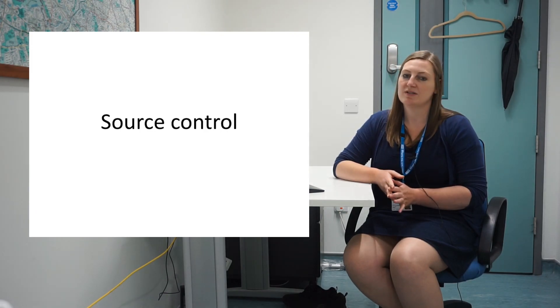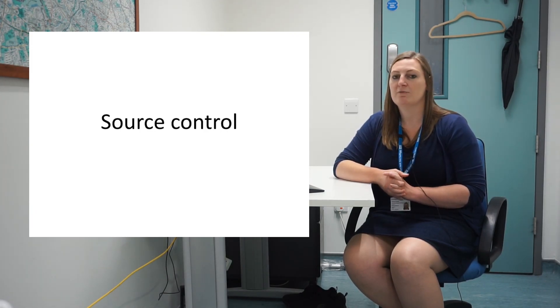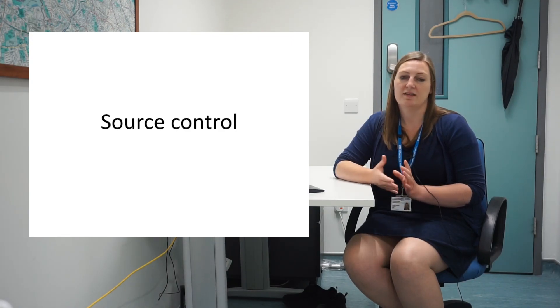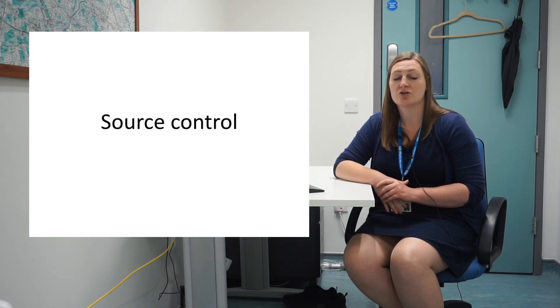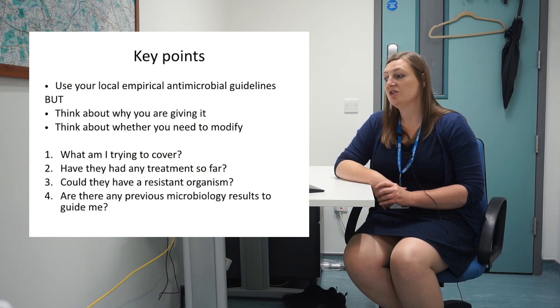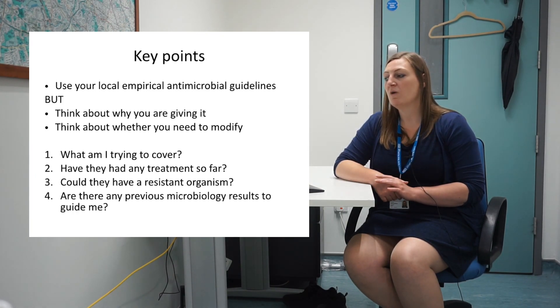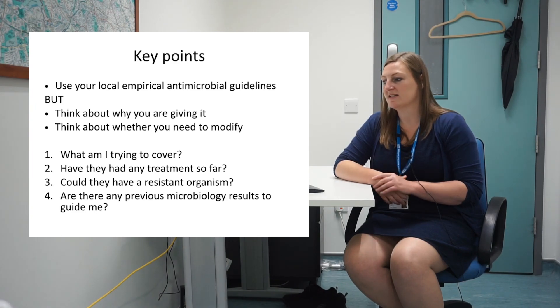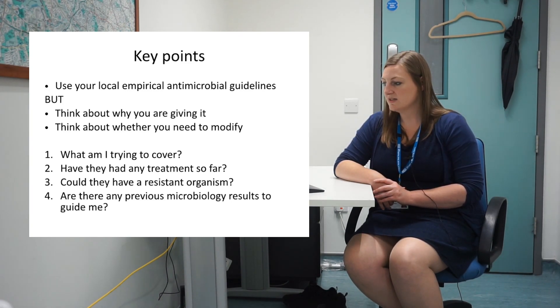Finally, the really important thing is to think about source control. It's great that you've selected the right antibiotic and thought about additional coverage, but sometimes antibiotics alone aren't enough to control an infection. If there's an abscess or another hidden source that hasn't been controlled, you need to think about whether you can drain it to gain control. To summarise: use your local empirical antimicrobial guidelines, but think about why you're giving it and whether you have a special situation that means you need to modify it. Use these four questions: what am I trying to cover? Have they had any treatment so far? Could they have a resistant organism? And are there any previous microbiology results to guide me? Thank you.